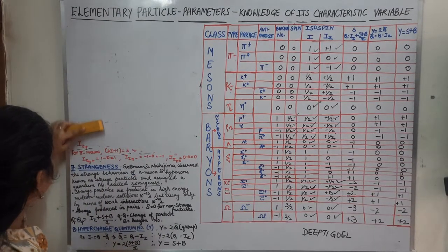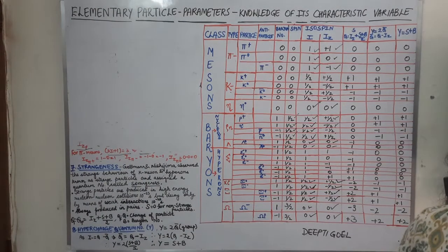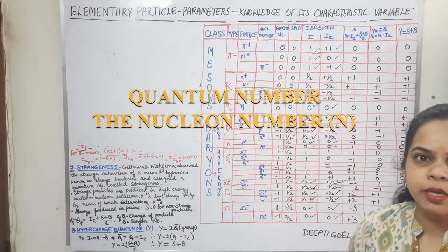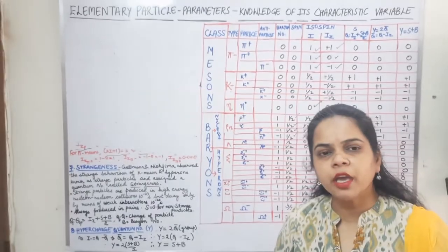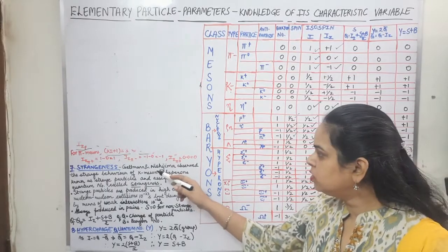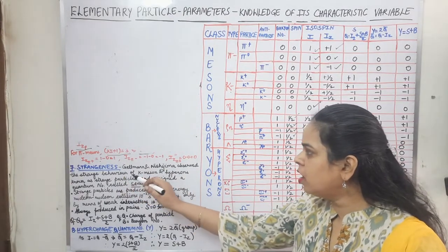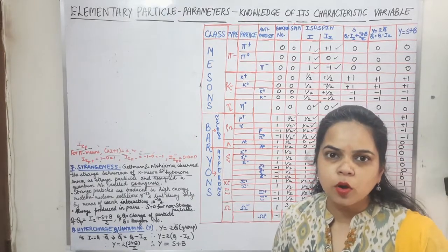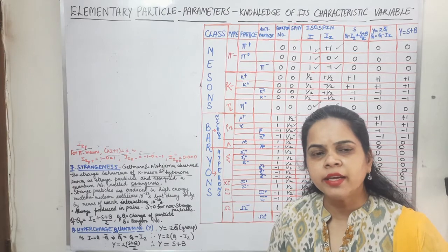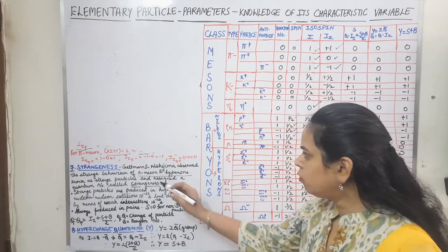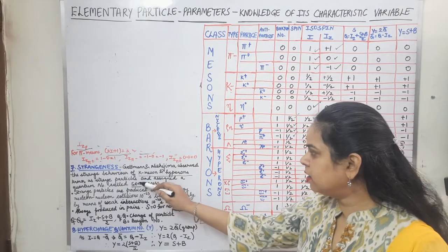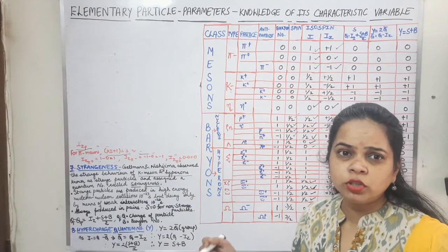Now let's calculate the next parameter: the strangeness quantum number, the S value. The strange behavior of particles was proposed by two scientists, Gell-Mann and Nishijima. They observed the strange behavior of K mesons and the hyperons. All four hyperons were strange particles, and in the meson family only the K-type mesons showed the peculiar or strange behavior. These were assigned the strangeness quantum number.